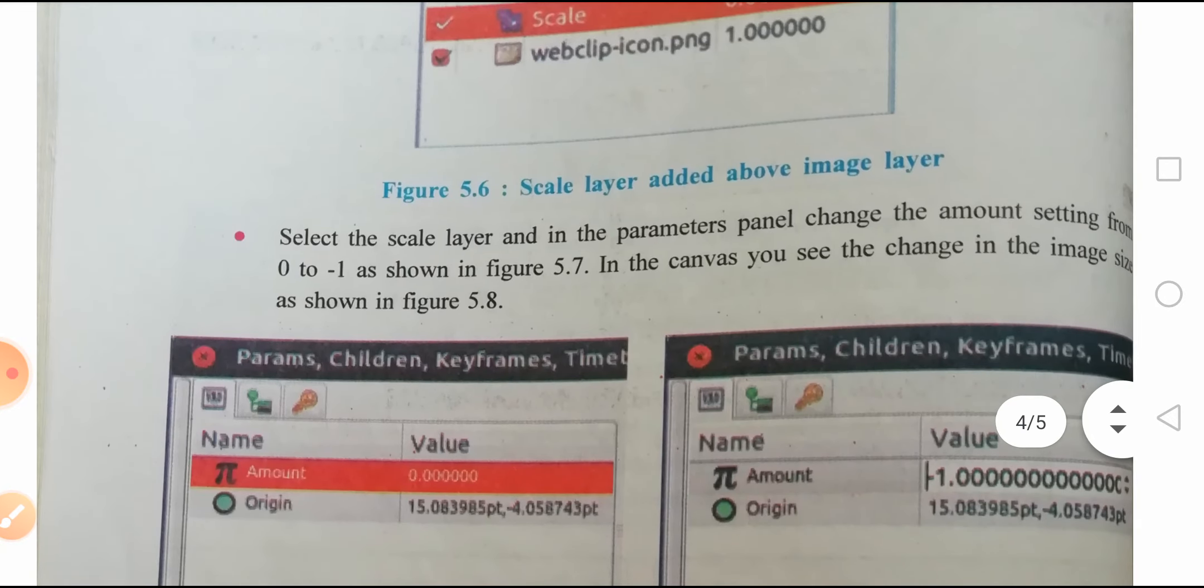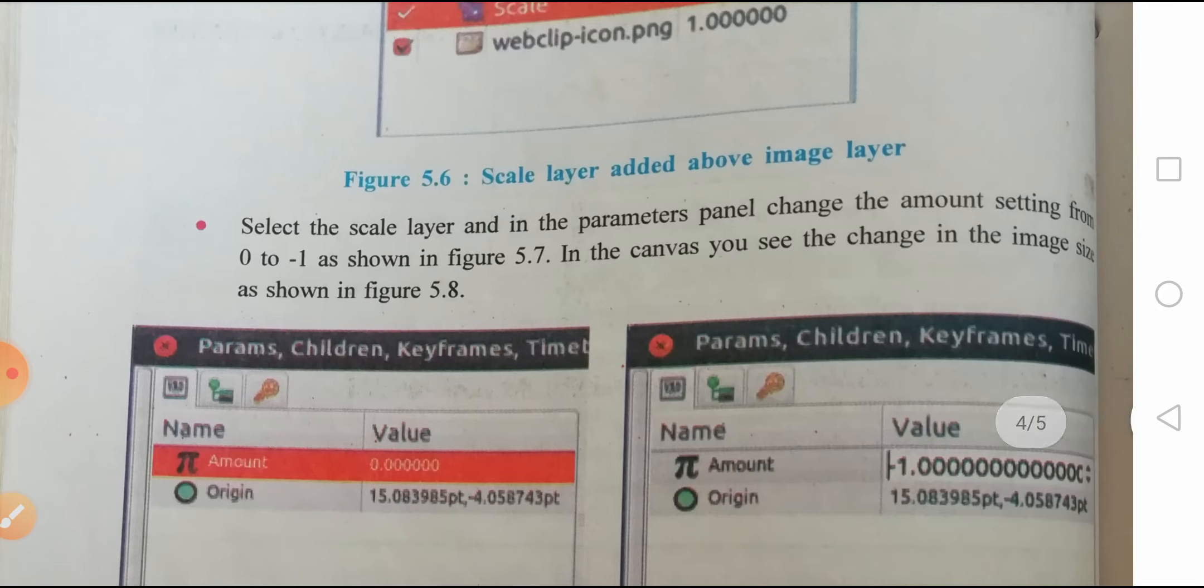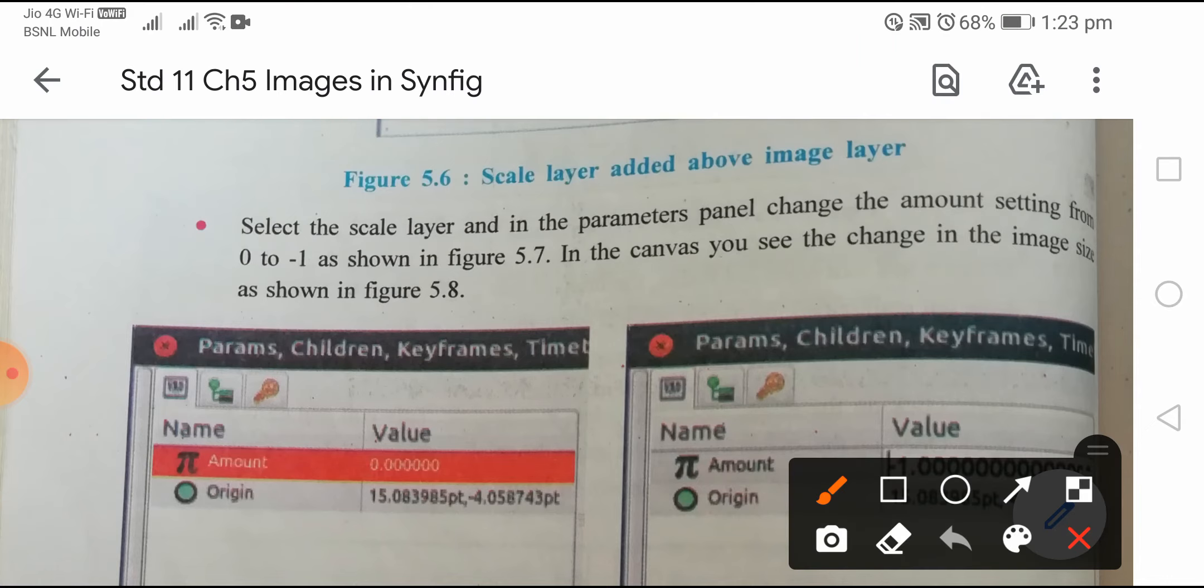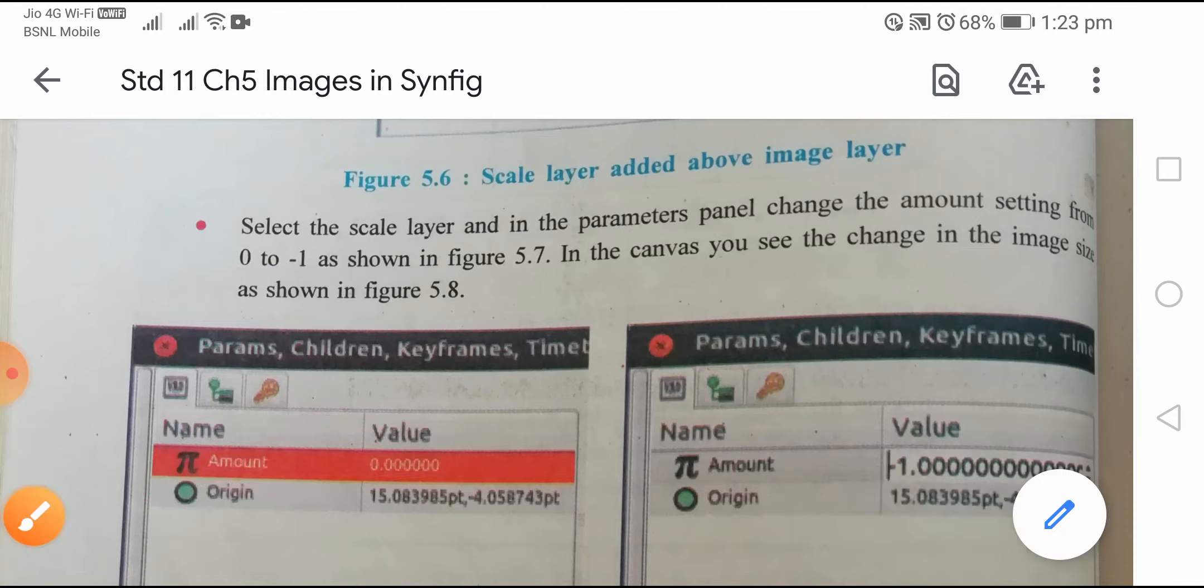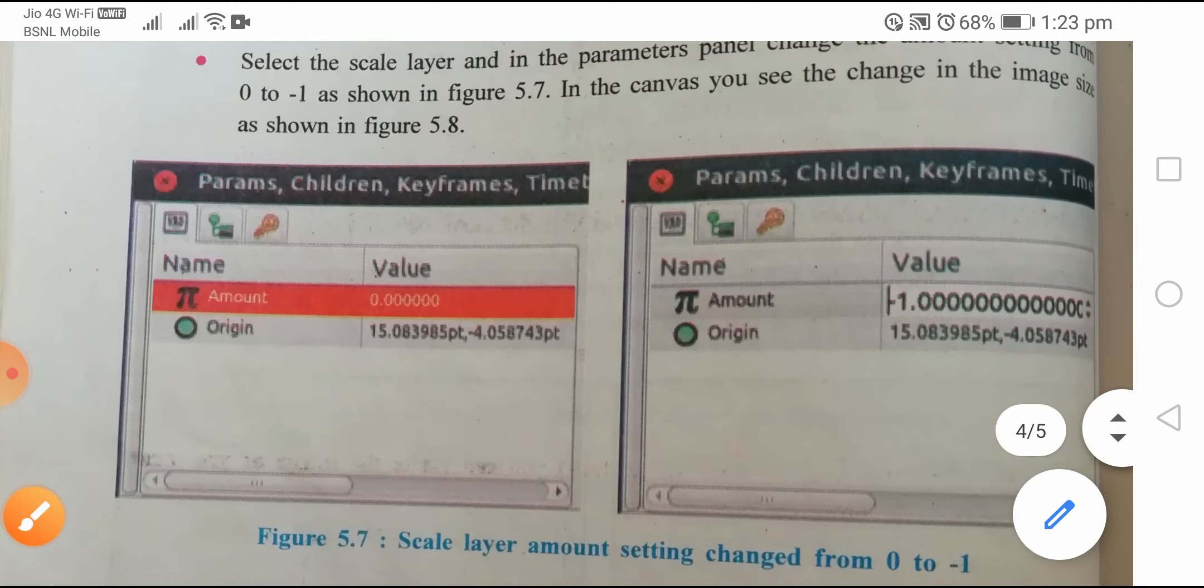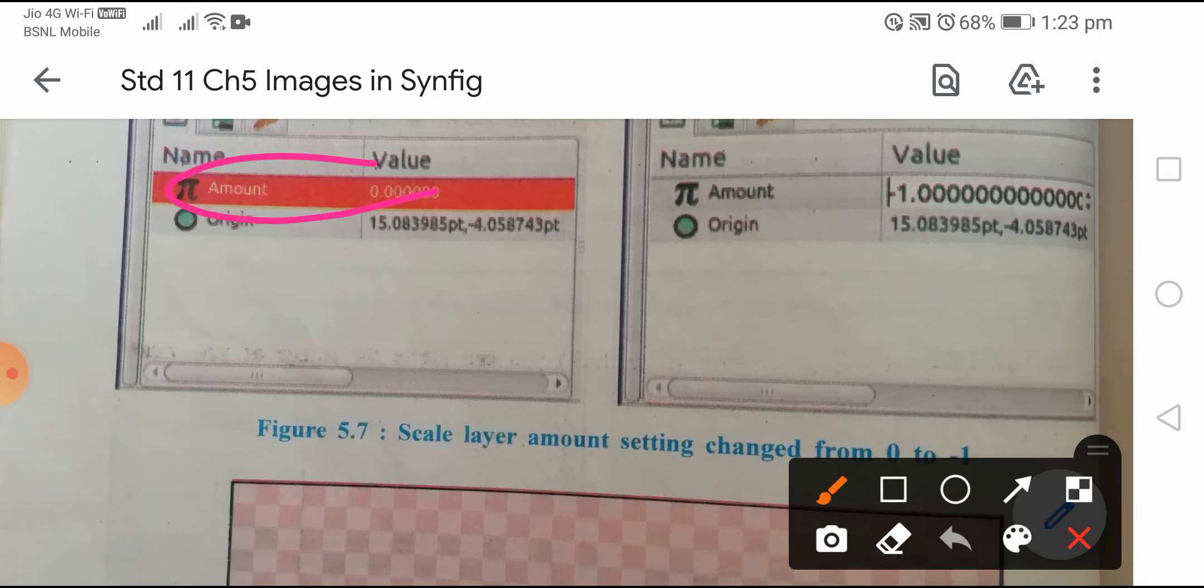Select the scale layer and in the parameters panel, change the amount setting from 0 to minus 1. In the canvas you can see the change in the image size. You will notice that change. The image gets scaled smaller.